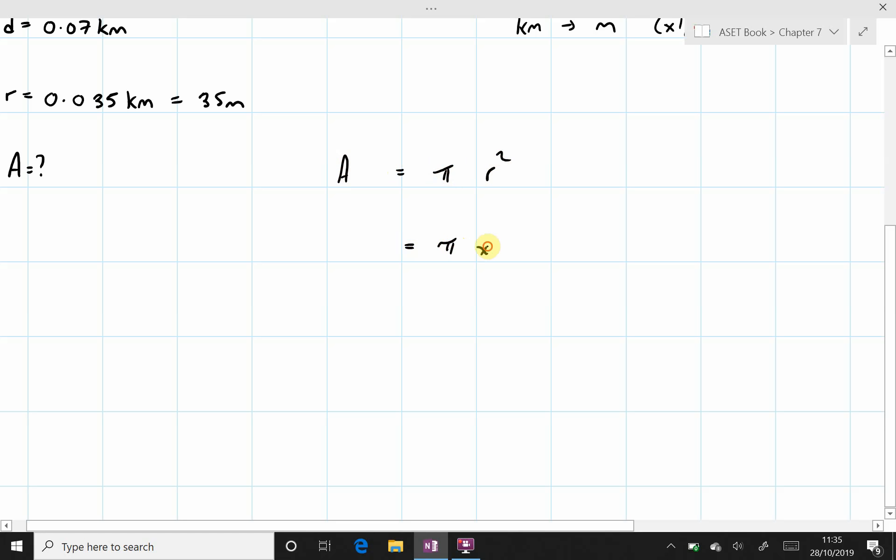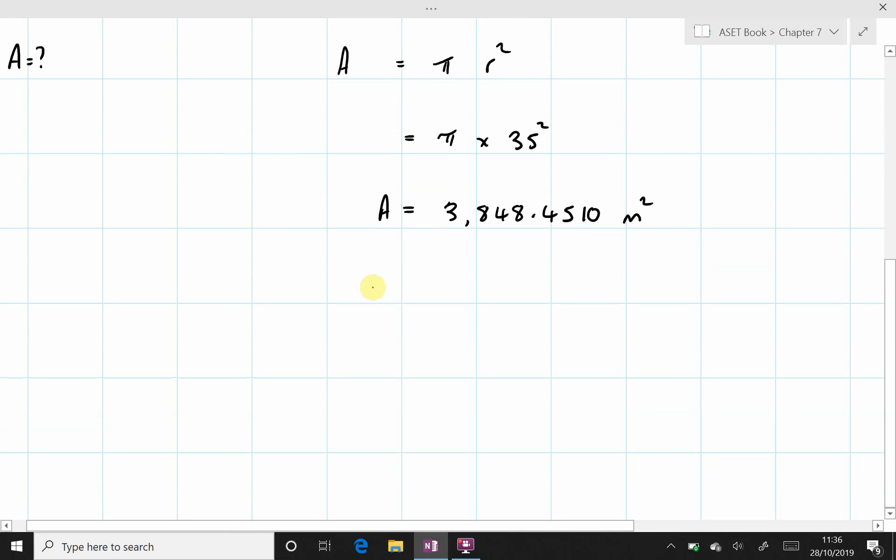Which equals pi multiplied by 35 squared. Which gives us an area equal to 3,848.4510 meters squared. But to two decimal places that will be 3,848.45 meters squared.